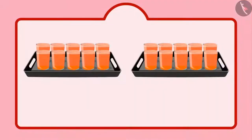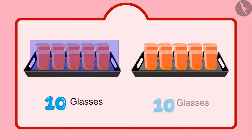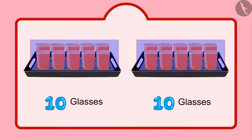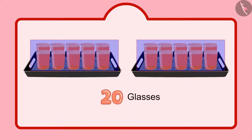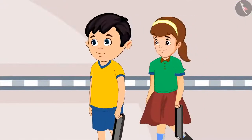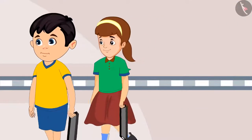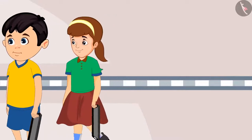Children, can you tell me how many glasses of sherbet Chotu's mother has made? Yes, you are right, children. Chotu has 2 plates of 10 sherbets each — that means 2 tens. This means Chotu has 20 glasses of sherbet. Together, Chotu and the team distributed all the glasses filled with sherbet.